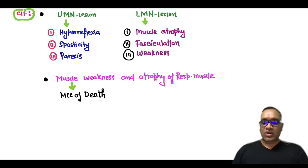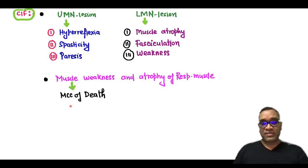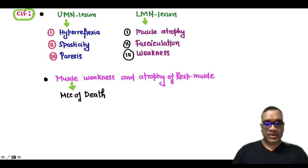Muscle weakness and atrophy of the respiratory muscles will be the most common cause of death in these patients, which will happen within 3 to 5 years of the onset of the disorder.